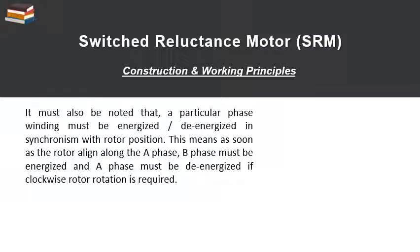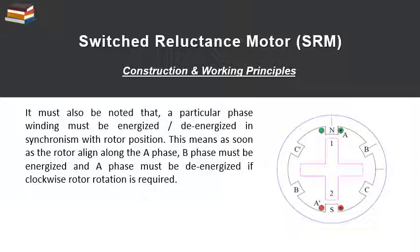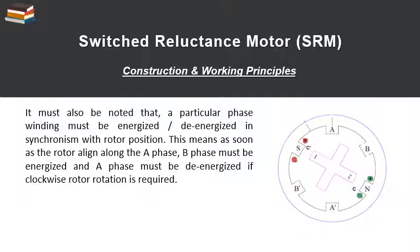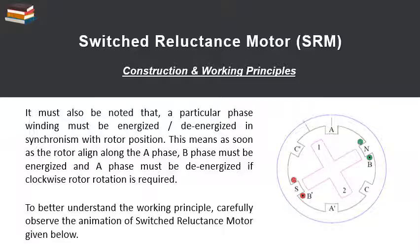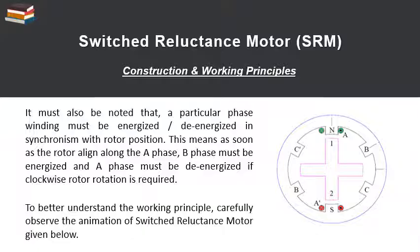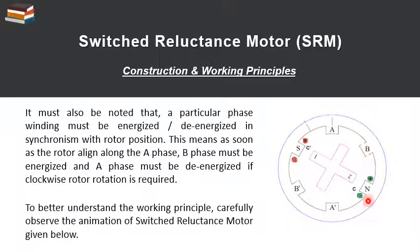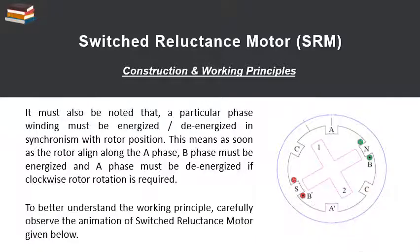It must also be noted that a particular phase winding must be energized or de-energized in synchronism with the rotor position. As soon as the rotor aligns along phase A, phase B must be energized and phase A must be de-energized if clockwise rotation is required. In the animation of the switched reluctance motor, we can see that first phase A is excited, then A is de-energized and B is excited, and similarly C is excited. The rotor gives us rotation when we follow the sequence A, B, C to excite. This is how we switch the phases in a switched reluctance motor.